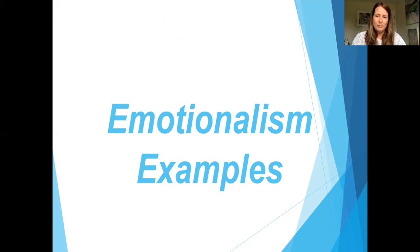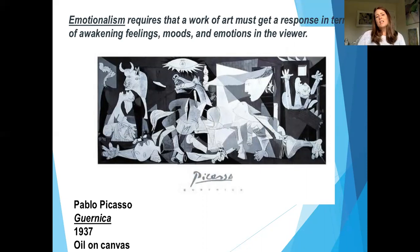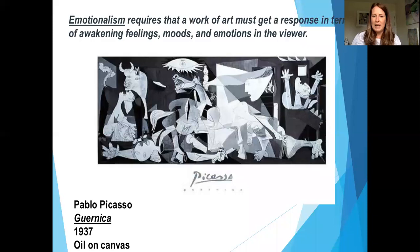Our third category is emotionalism — you probably have an idea of where I'm going with this. With emotionalism, you have to get a response in terms of how your feelings, moods, or emotions have been invoked by the artist — that is the goal of the artist. This is a very famous painting by Pablo Picasso titled Guernica, created right after a bombing. When we look at this, we're seeing anguish and pain. The artist is really trying to depict that emotion through the shapes and colors chosen.